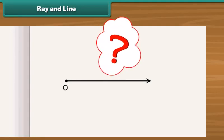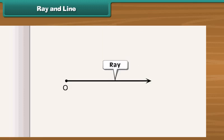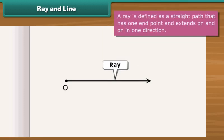What will you call this? It has one end point. On its other end, there is an arrow head. This implies that it can be extended in the direction of the arrow head. This is called a ray. We define a ray as a straight path that has one end point and extends on and on in one direction.